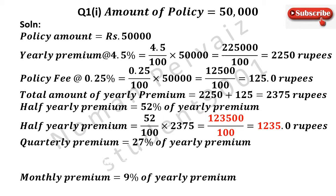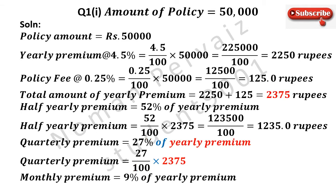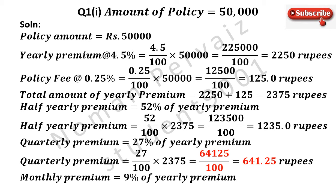Here we need to calculate quarterly premium, which is equal to 27%, percentage sign is removed by dividing the whole term with 100, multiplied with total amount of yearly premium which is 2375. 27 multiplied with 2375 becomes 64125, divided by 100 comes as it is. Now if we divide 64125 by 100, then it becomes 641.25 rupees.